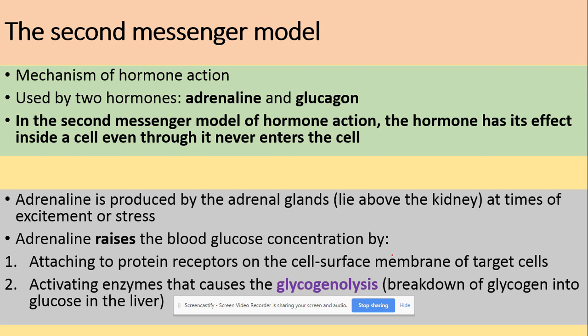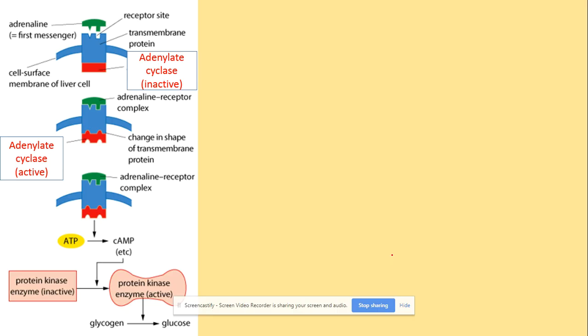The job of adrenaline is to increase blood glucose concentration. This is done by the hormone binding to protein receptors on the cell surface of target cells. The main action of the second messenger model is to activate enzymes that cause the process called glycogenolysis — the breakdown of glycogen into glucose — which takes place in the liver. The target cell here is a liver cell, and we can see the receptor sites on the liver cells along with an attached adenylate cyclase, which is initially inactive.